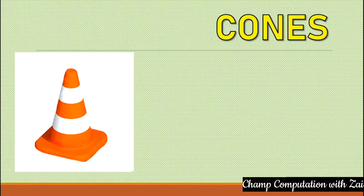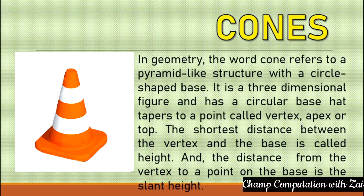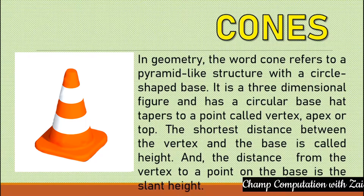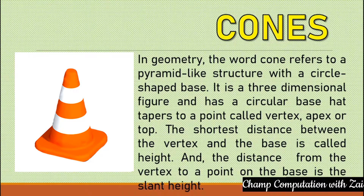In Geometry, the word cone refers to a pyramid-like structure with a circle-shaped base. So the base is a circle. It's like a pyramid, but in a pyramid the base is a polygon, whereas in a cone the base is circle-shaped.